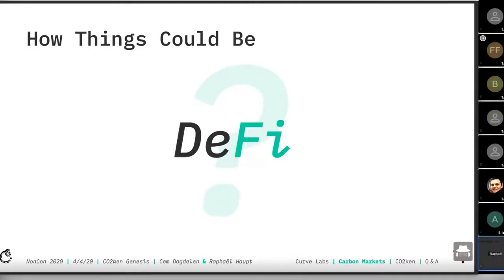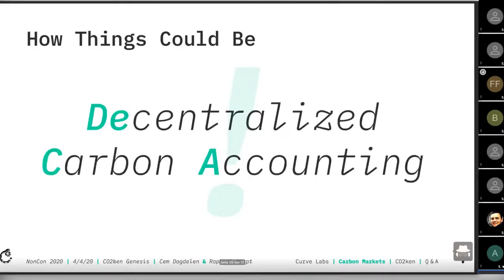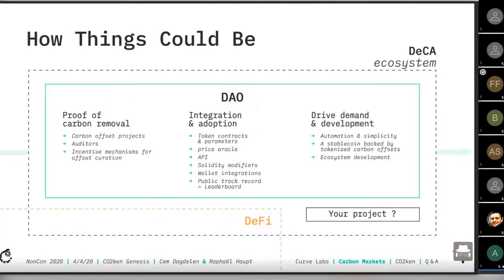You all know decentralized finance. On top of DeFi, we actually need DeCa — not only to decarbonize our world, but to create a decentralized accounting ecosystem. What this means is we envision an ecosystem with different projects and a DAO governing the different parts of the value chain of emission reductions in carbon markets. At the beginning of this value chain, we have to emit a proof of carbon removal.